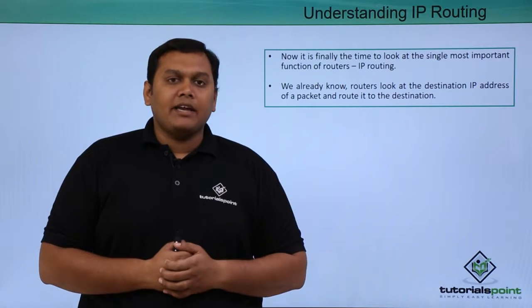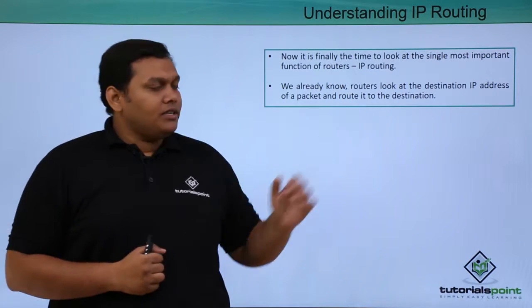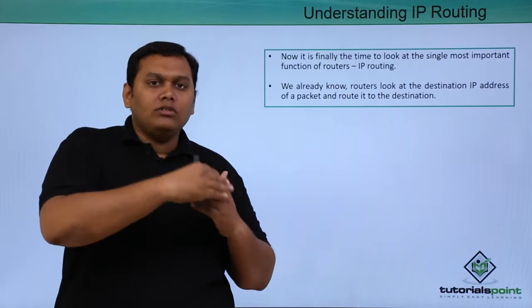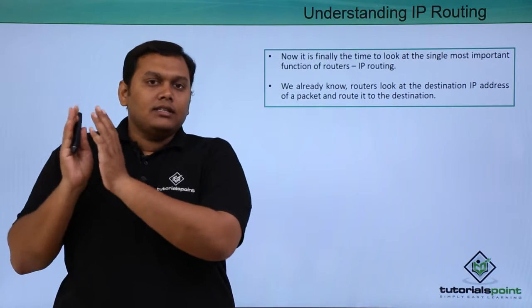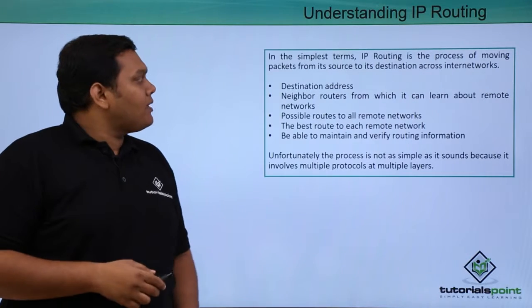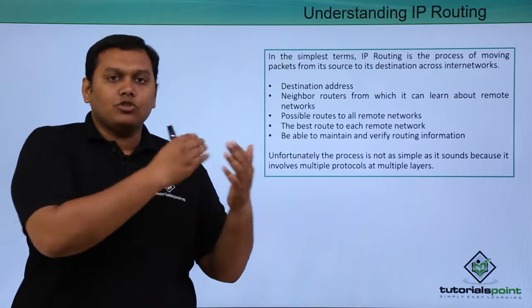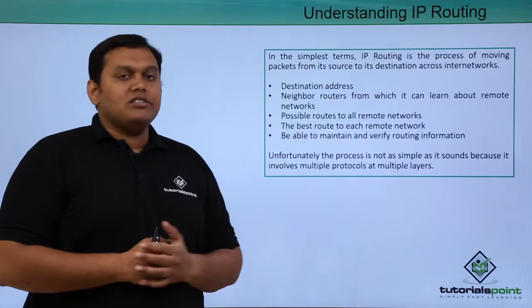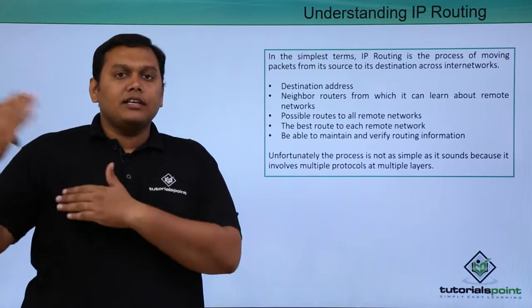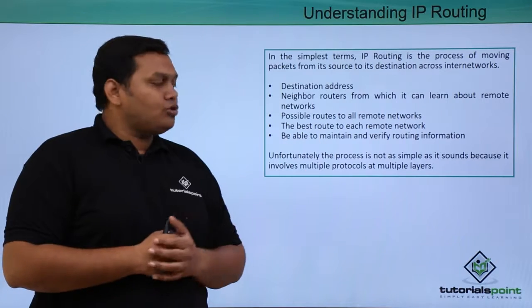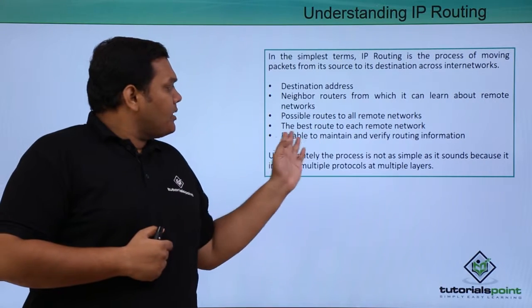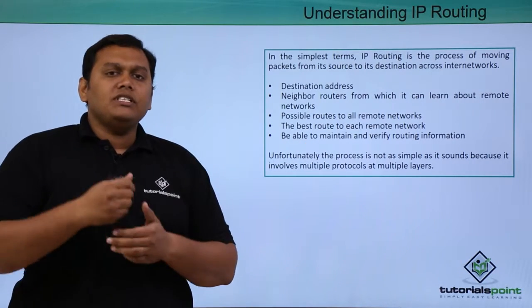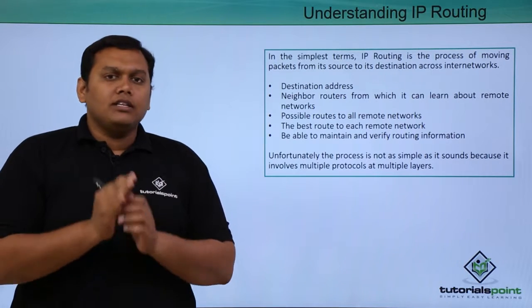We already know routers look at the destination IP address of a packet and route it to the destination. IP routing is simply the process of moving packets from source to destination based on the destination IP address. Neighbor routers help learn destination IP addresses, possible routes to all remote networks, best routes to each remote host, and also help maintain and verify routing information. These are the main key important functions of IP routing.